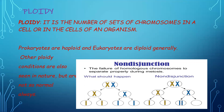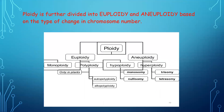Ploidy is the number of sets of chromosomes in a cell of an organism. Prokaryotes are usually haploid and eukaryotes are usually diploid. Other ploidy conditions also exist in nature but are not so common. Ploidy is further divided into euploidy and aneuploidy based on the type of change occurring in chromosome number. Euploidy is further divided into monoploidy and polyploidy.